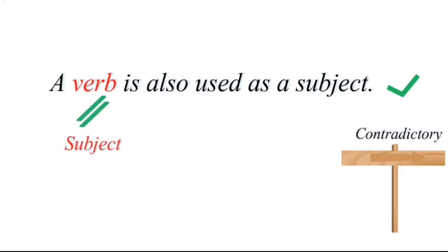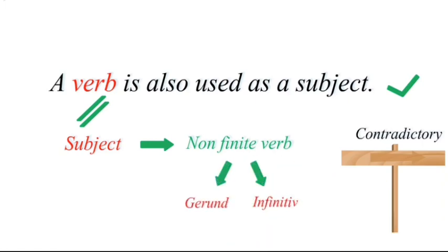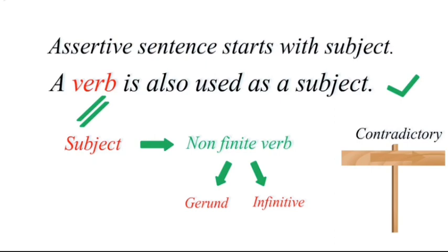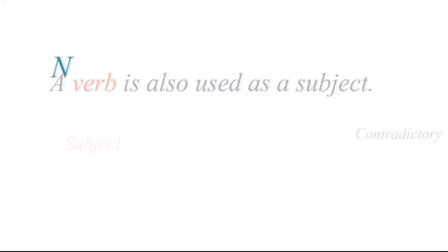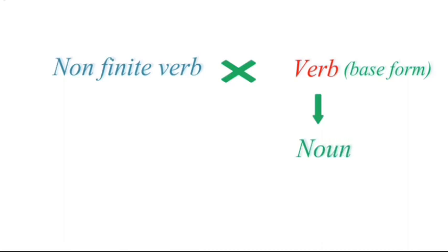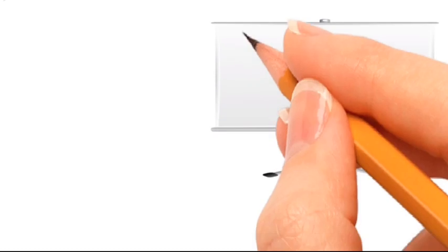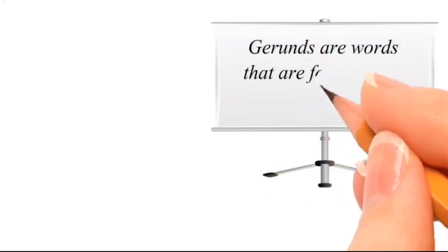A non-finite verb used as a subject can be either a gerund or an infinitive. However, we cannot use these non-finite verbs straight away in their base form. Instead, we first change them into a noun and then use them as a subject. This is what you need to understand, and from here we derive the definition of gerund.